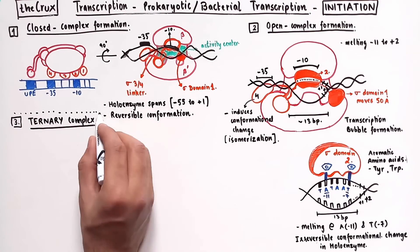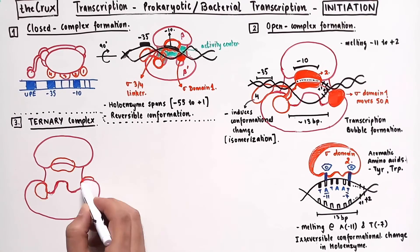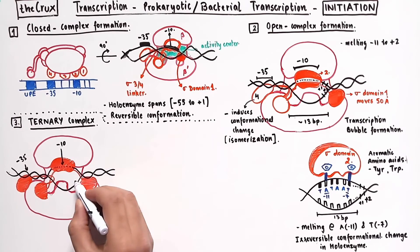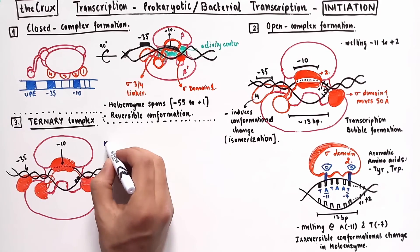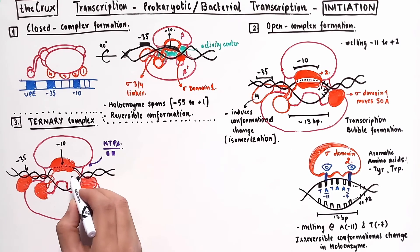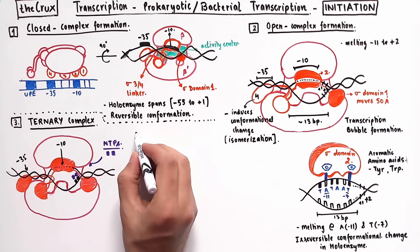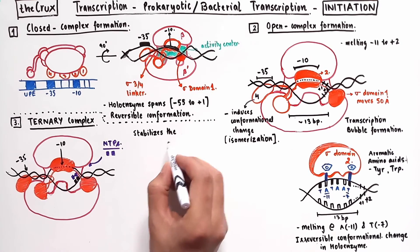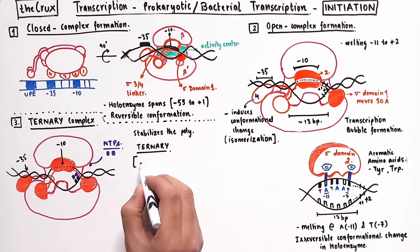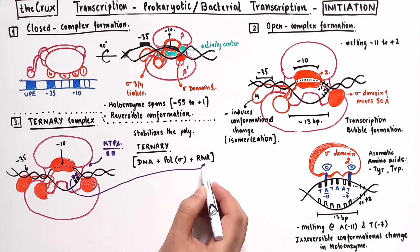After the formation of transcription bubble and DNA melting, the open complex transitions into the ternary complex. In the open complex, the conformation is still slightly unstable because the plus 1 and plus 2 sites are unbound. So to transition to a more stable state, the activity now focuses on the plus 1 and the plus 2 site. And the enzyme brings in the first couple of NTPs and makes the first couple of bases of the RNA. So this short processing of couple of bases stabilizes the enzyme. And it is at this stage that the open complex transitions into the ternary complex, which is simply a complex formed by the DNA, holoenzyme, and the RNA.